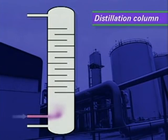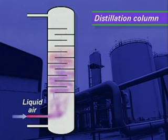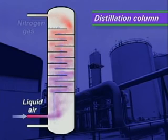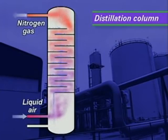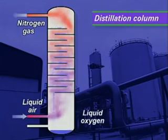Air is cooled until it becomes liquid. Nitrogen has a lower boiling point than oxygen, so it rises as a gas up the distillation column. Liquid oxygen collects at the bottom.